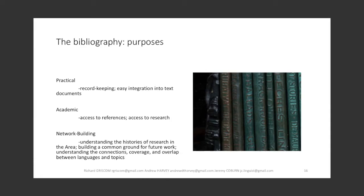A further core purpose exists in building and strengthening our network. We as a network are more coherent and effective when we can see, access, and engage with our common research history. This provides a similar starting point for future work. It also is a first step in understanding how each of these threads of research fit together: which works talk to each other, how have ideas developed, and who is at the center and who is at the periphery of the conversations we have. These are some of the central purposes of having a Rift Valley bibliography.